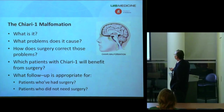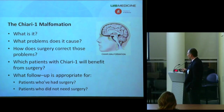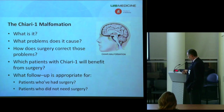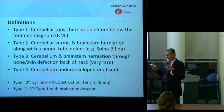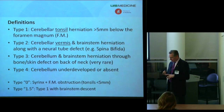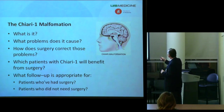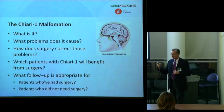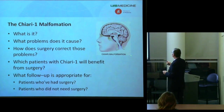What's a Chiari malformation, what sort of problems does it cause frequently, what's the intent of surgery with regard to correcting the underlying problem that's producing the symptoms and signs, what kind of patients we think would benefit from surgery, and then follow-up. At the most basic level, a Chiari malformation is herniation or descent of brain tissue — predominantly cerebellum but there can be some brain stem involvement as well — below the foramen magnum.